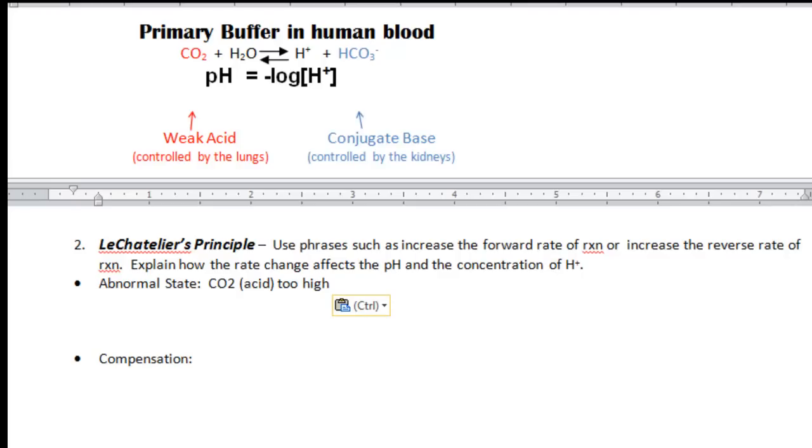Well, from our summary, we concluded that the CO2, the acid, is too high. Let's take a look at the reaction up here. If there's too high a concentration of CO2, that will cause the forward rate of reaction to increase.